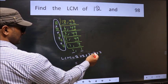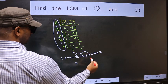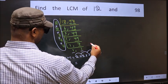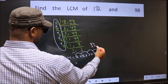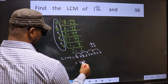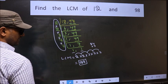So let us multiply these numbers. 2 into 2, 4 into 3, 12 into 7, 84 into 7. 7 into 4, 28, 8, 2, 7, 8, 56 plus 2, 58. So 588 is our LCM.